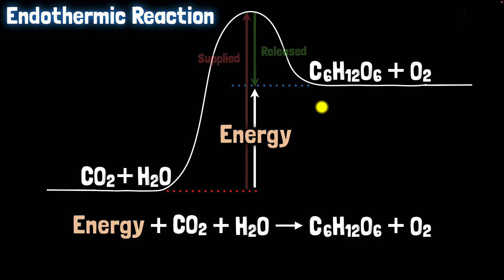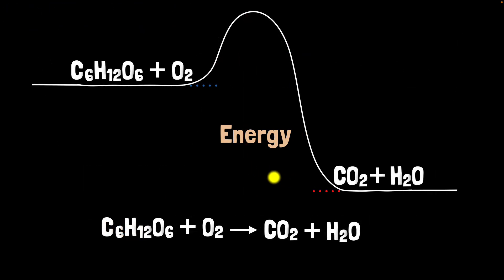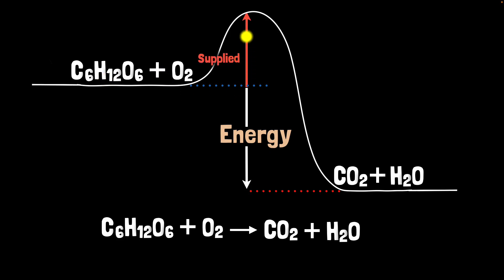What if we started with this and ended with this? Well, it would now be the exact opposite — the energy would be released because the product molecules have lower chemical energy than the reactant molecules. Again, you can imagine that to break these bonds, you need to supply this much energy. You should always supply energy to break bonds.